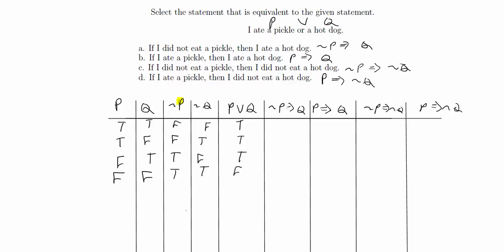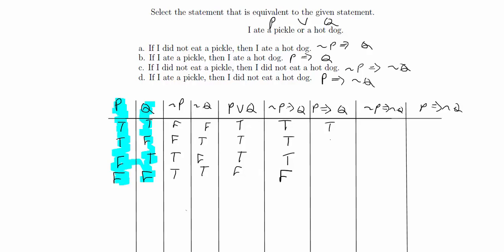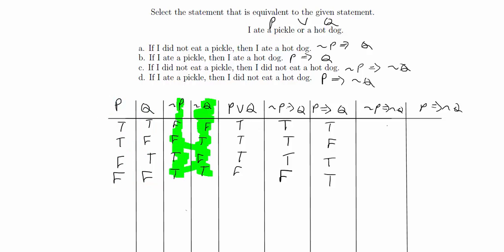For not P implies Q, we look at the not P column alongside Q. The first two rows have not P as false, so regardless of Q, those are true. Then we have true implies true — true. Then true implies false — false, so that whole statement is false. For P implies Q: true implies true is true, true implies false is false, then false implies true and false implies false are both true.